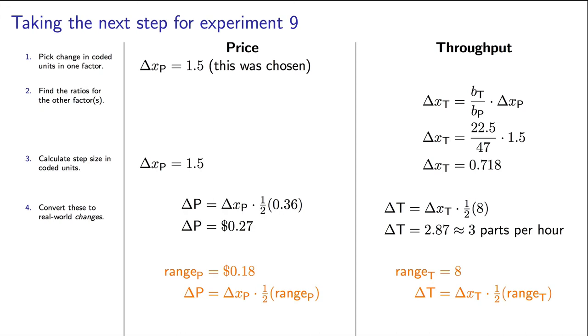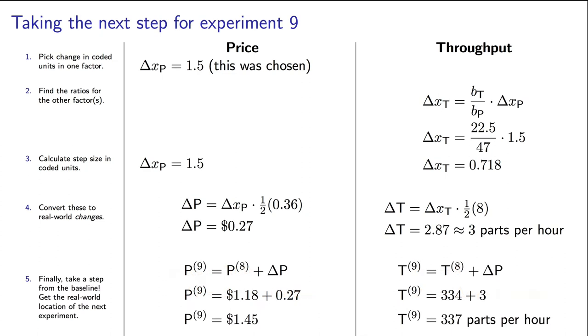For price, it's a $0.27 increase that we would add to the baseline value. Now we can go tell our employees or colleagues that the ninth experiment is at 337 parts per hour with a price of $1.45. Remember, our colleagues don't speak in coded units. We have to talk with them in actual units, even though we speak in coded units behind their backs when we deal with the least squares model.